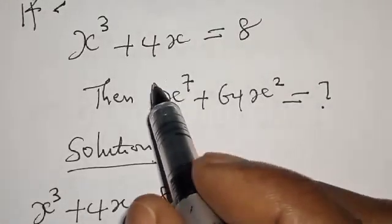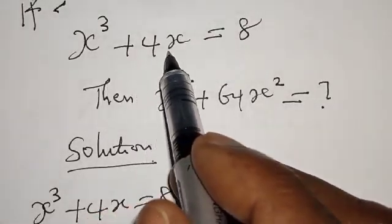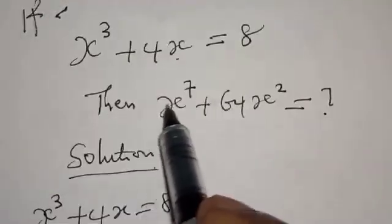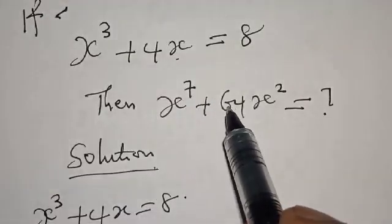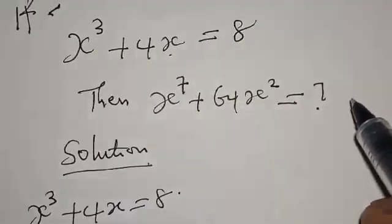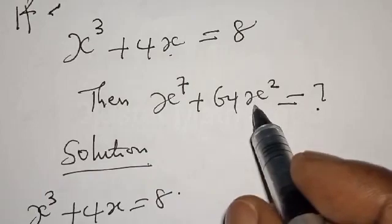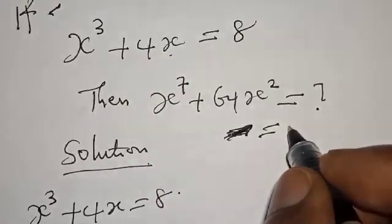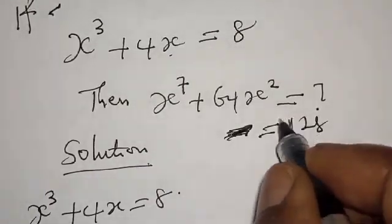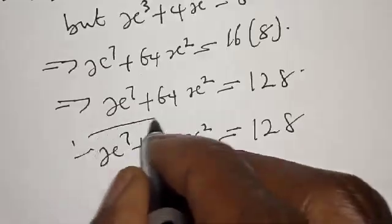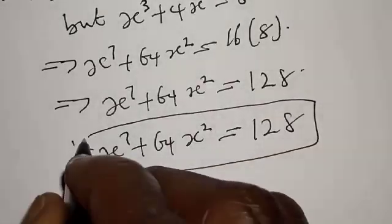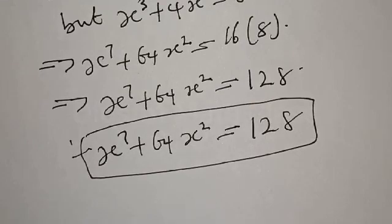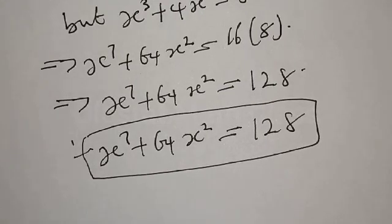Remember the question says s raised to the power 3 plus 4s is equal to 8. Then what is the value of s raised to the power 7 plus 64s squared? And s raised to the power 7 plus 64s squared is equal to 128. If you've enjoyed the class, please don't forget to like, share, comment and subscribe. Thank you.